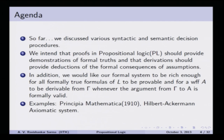In axiomatic propositional calculus, we intend that proofs in propositional logic should provide demonstrations of formal truths — deriving all true propositions from a given set of self-evident truths, called axioms, which cannot be proved. Derivations should provide deductions of formal sequences of assumptions. All valid formulas in the formal system now have proofs generated as outcomes of axioms and transformation rules.